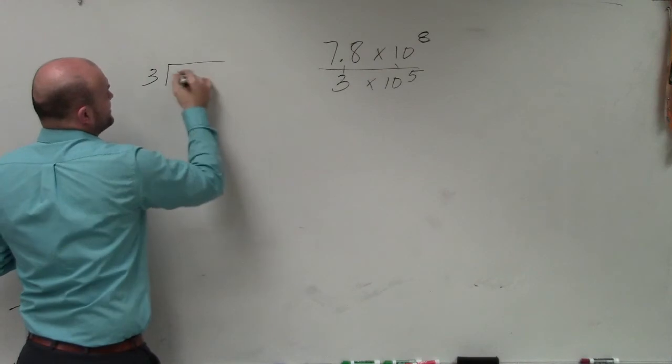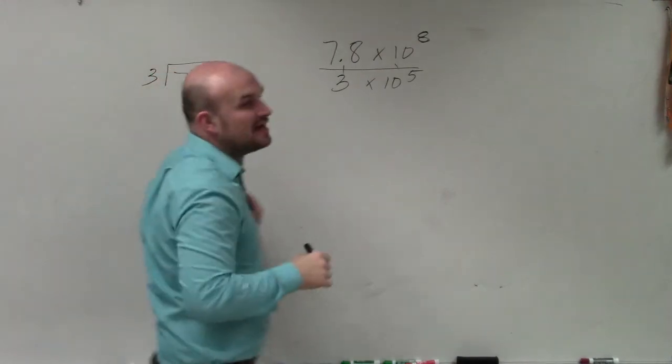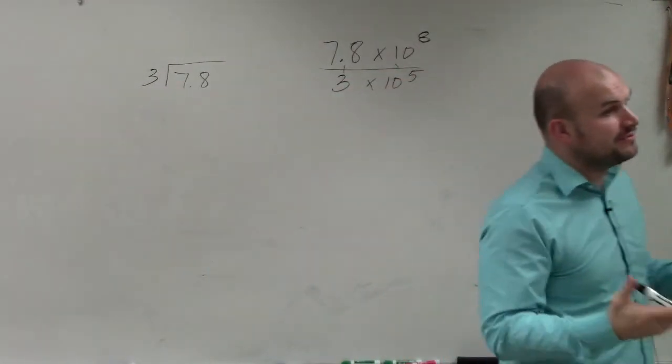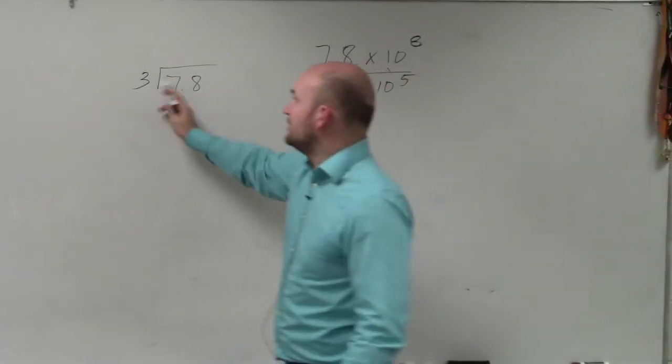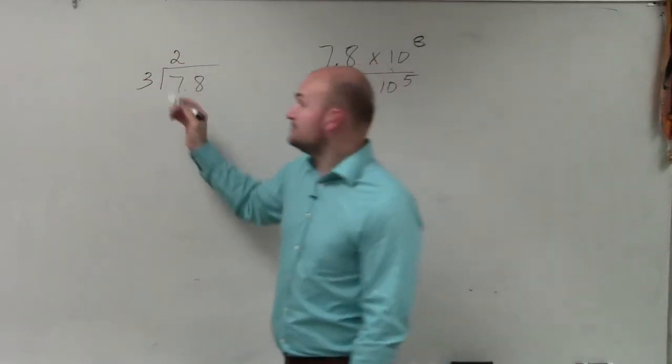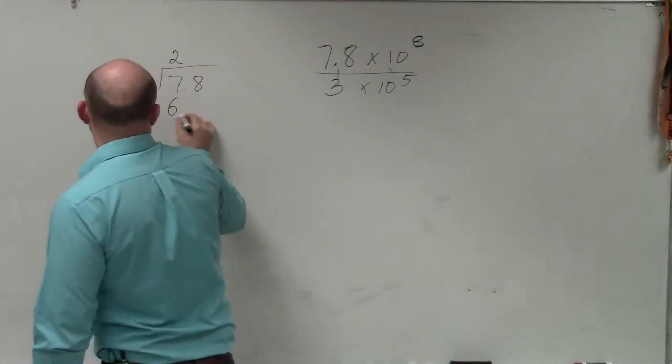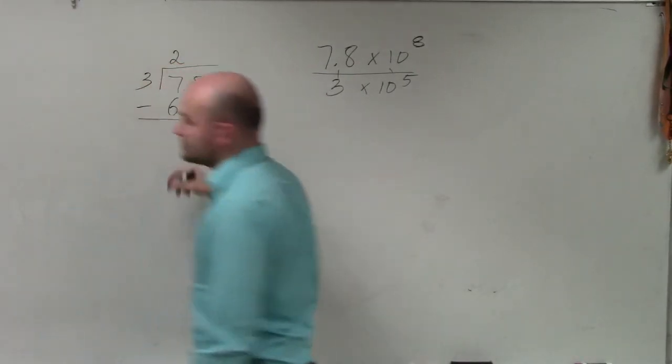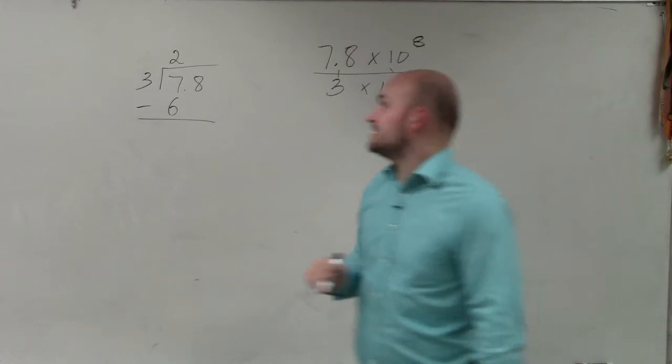So I have 3 divided into 7.8. Now if you guys remember, in long division, when doing division, we say 3 goes into 7 twice. Then you multiply 2 times 3, which is 6. And then we subtract the rows. Well, 7 minus 6 is 1.